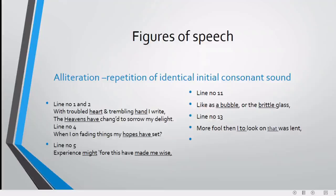There are many examples of alliteration in that poem. First of all, in line number 1 and 2, we will find the 'h' sound is repeated. 'With troubled heart and trembling hand, I write, The heavens have changed to sorrow my delight.' In line number 4 as well, there is repetition of 'h' sound. 'When I, on fading things, my hopes have set.'